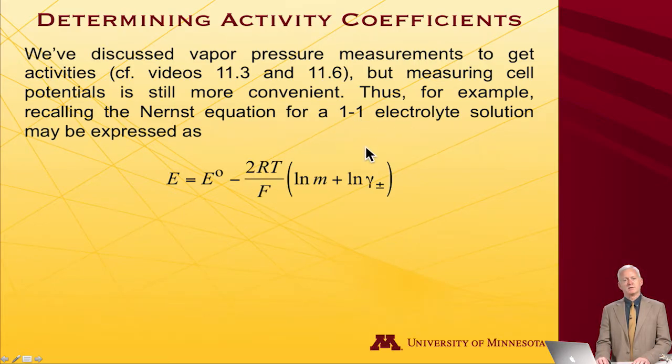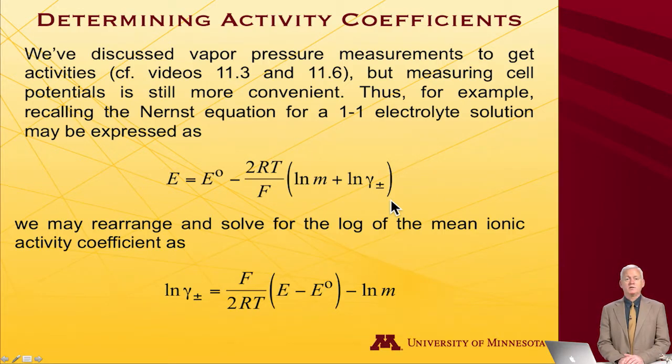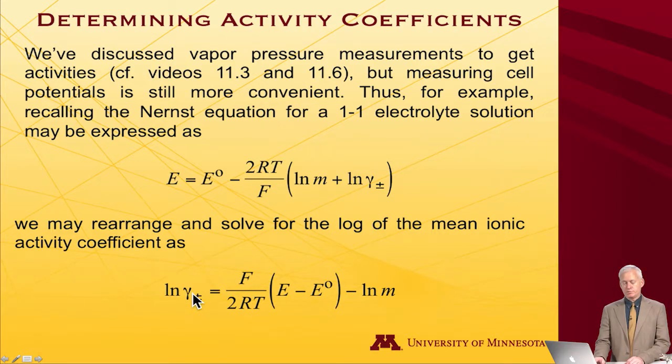For example, for a one-to-one electrolyte solution, I would be able to write my Nernst equation as the actual cell potential, as the standard potential, minus 2RT over F. And I've got one-to-one, so there's a one hiding in there for the number of electrons. I'm assuming a singly charged species. Log of the molality plus log of the mean ionic activity coefficient. So I can rearrange to solve for the log of the mean ionic activity coefficient as shown here. And that means I look up my standard potential, I make my cell with given molalities, measure its potential, and I know what log gamma plus minus must be.